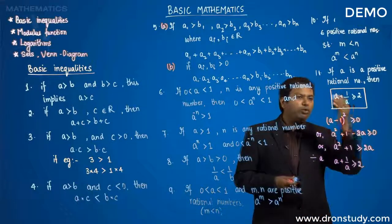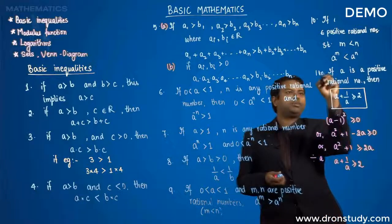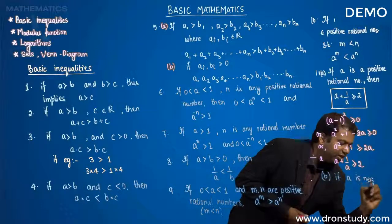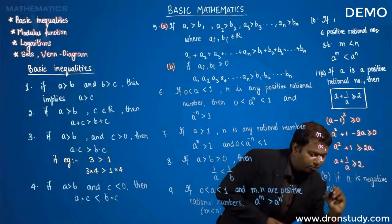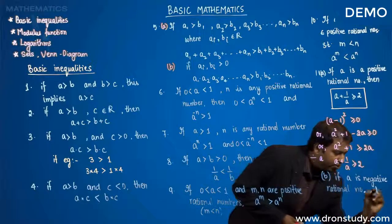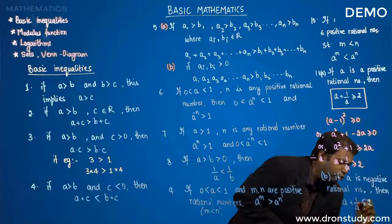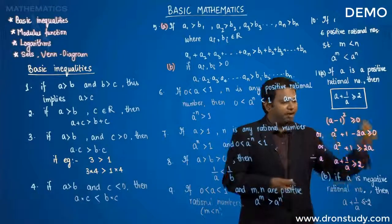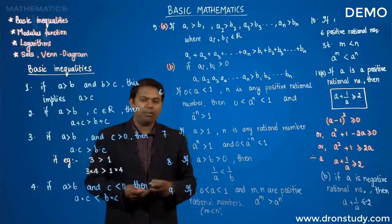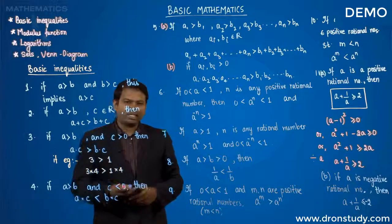You might also ask: what if a is a negative rational number? That is part b of this property. If a is a negative rational number, then a + 1/a is always less than or equal to negative 2. You can prove this by substituting a with negative b in the above inequality and you will get the answer. So those are the basic inequalities — let's discuss some more in the next session.